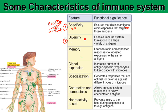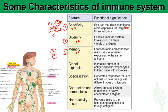The second characteristic is diversity. Our immune system can mount responses to different types of pathogens — bacteria A, bacteria B, viruses, parasites, and other pathogens — so the immune system is diverse. Third, the immune system has memory capacity: when an immune response is induced, B cells and T cells generate specific memory B cells and memory T cells that reside in the body for a long time.